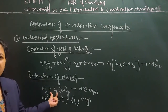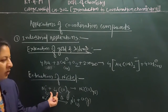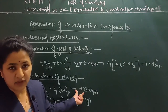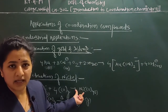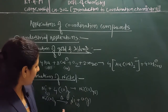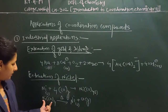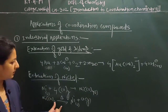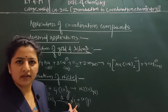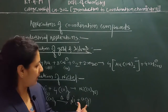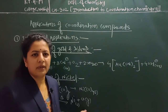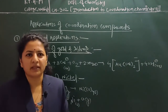When nickel is treated with carbon monoxide gas, it forms nickel tetracarbonyl gas, which is a very highly toxic compound. That is why we again heat this nickel tetracarbonyl, and it will separate into nickel and carbon monoxide gas. These are the simple extraction methods of nickel.